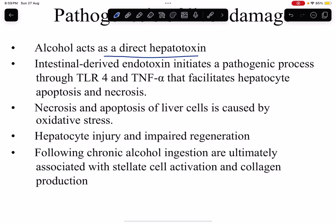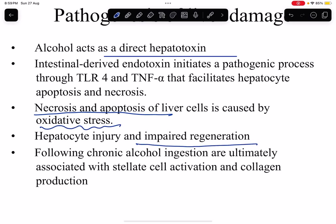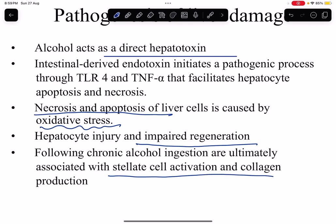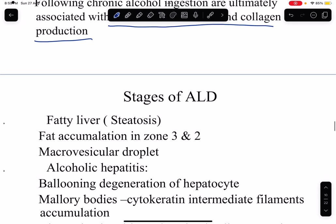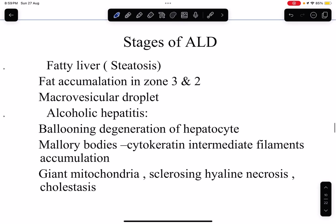Following chronic alcohol ingestion, there is ultimately stellate cell activation and collagen production leading to fibrosis of the liver. So alcohol acts as a direct hepatotoxin, causes necrosis and apoptosis by oxidative stress, impairs regeneration, and ultimately leads to stellate cell activation and collagen production resulting in hepatic cirrhosis.